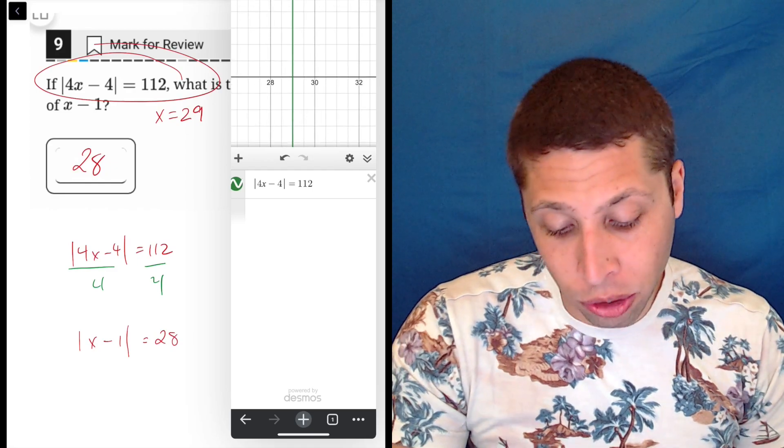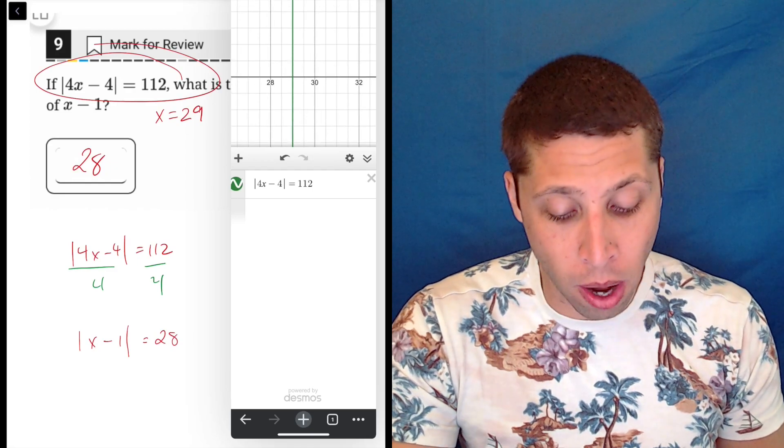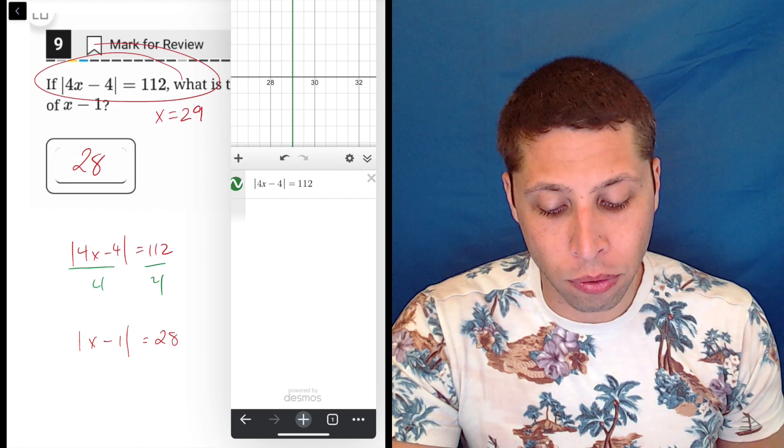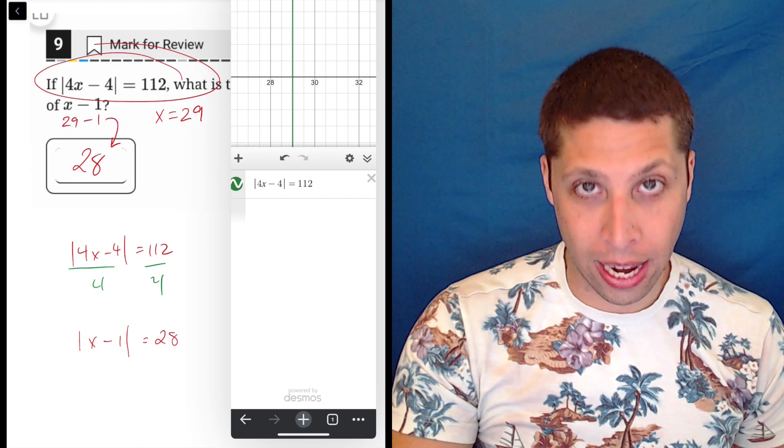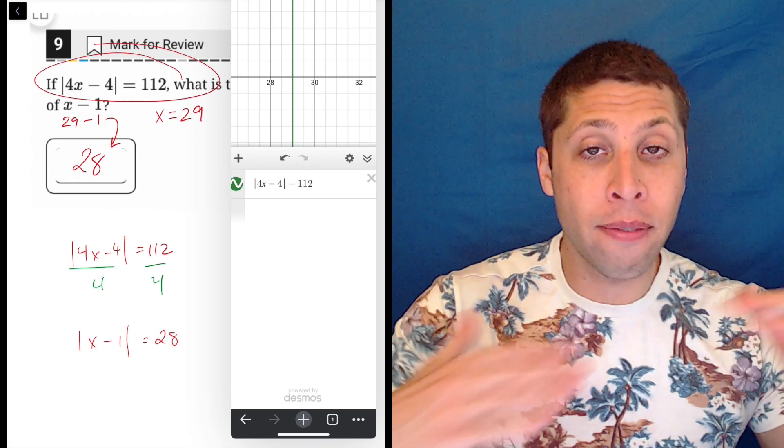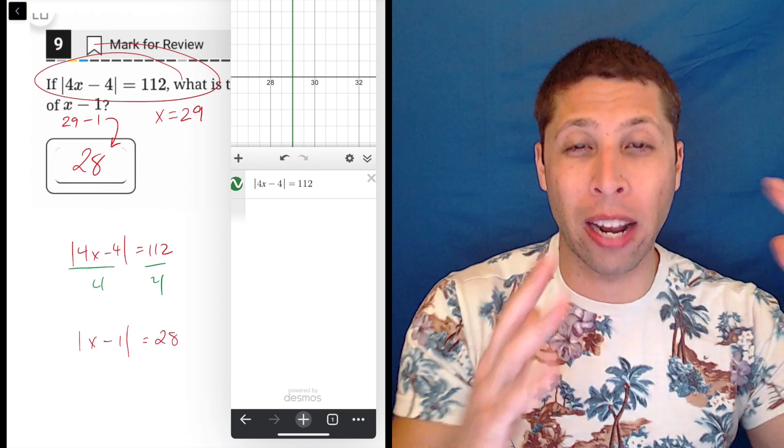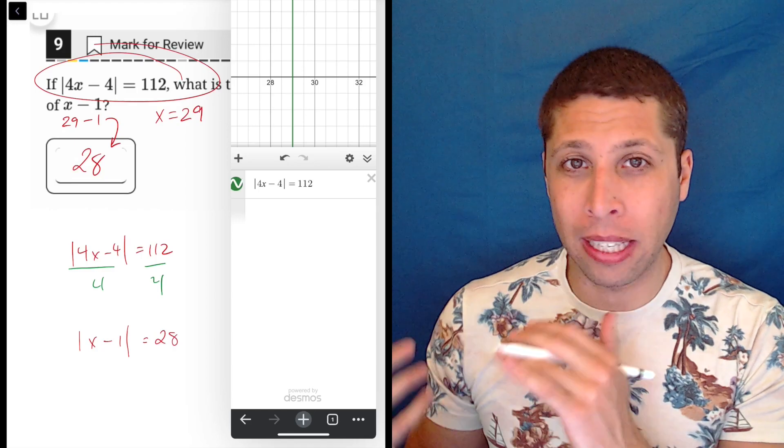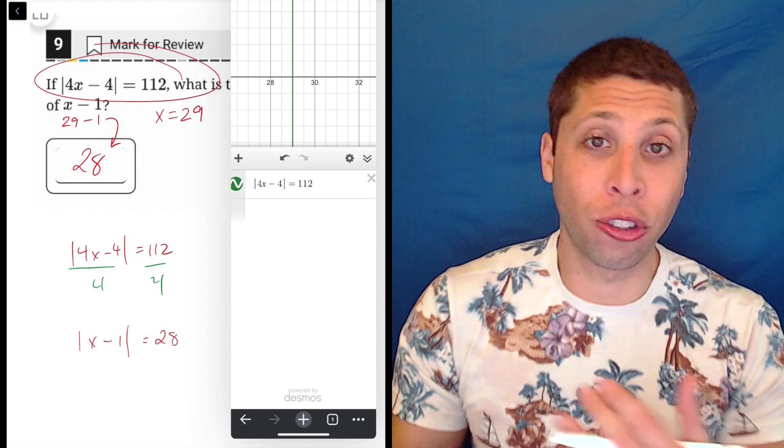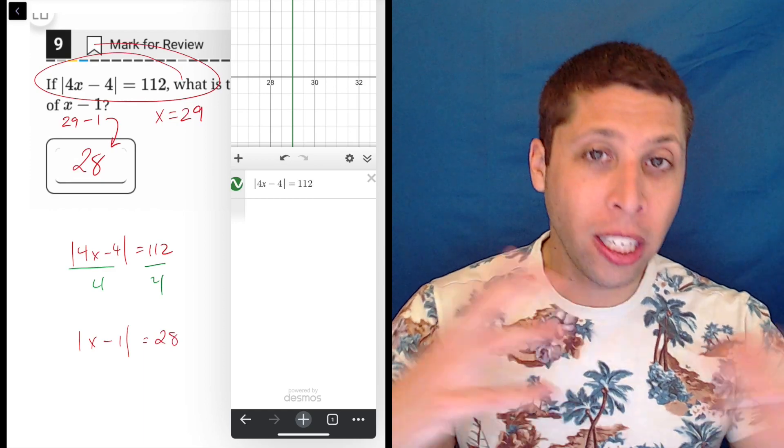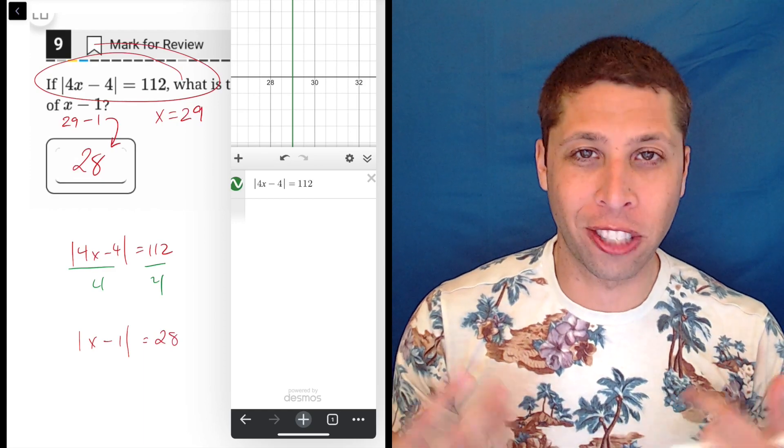And then all we need to do is just think about the rest of the question. What do they want? They want the positive value of x minus 1, so that's 29 minus 1, which is still 28. So the calculator does have this potential mistake of out of habit you solve for x because that's just what they normally want. But we also should know the SAT very often changes up what they ask of us just to see if we're paying attention.